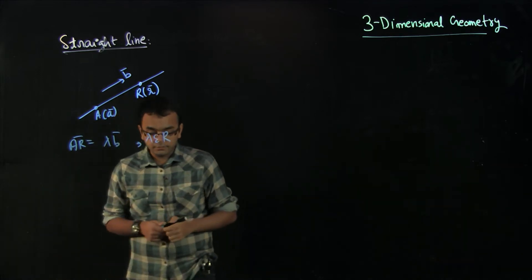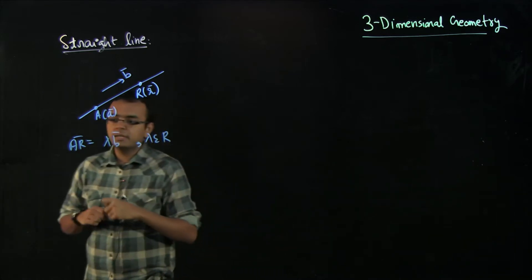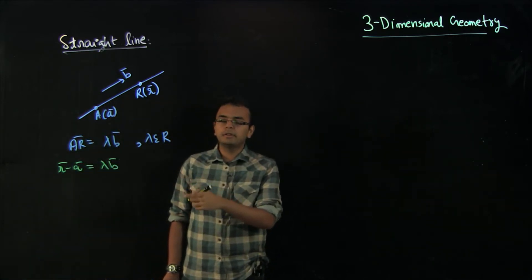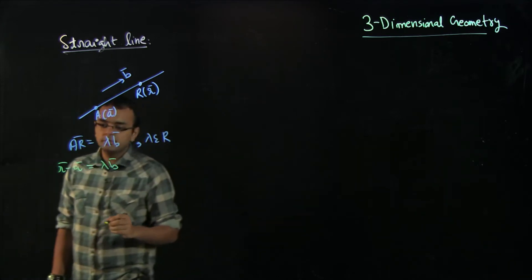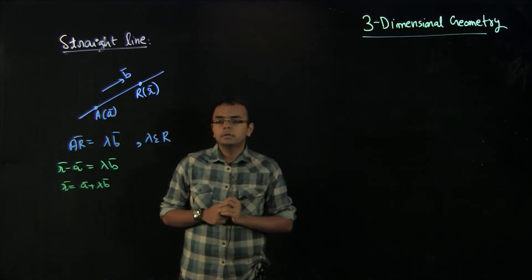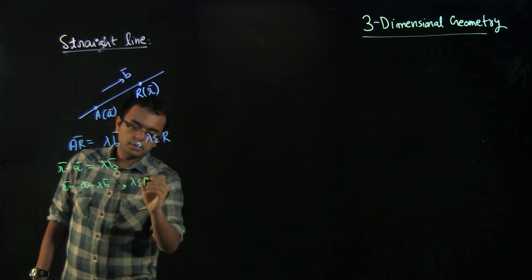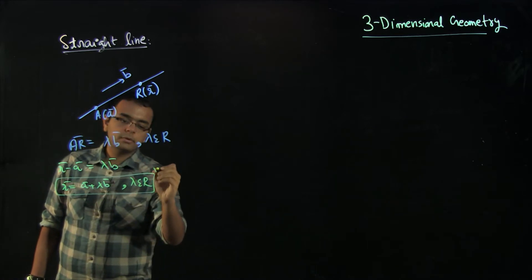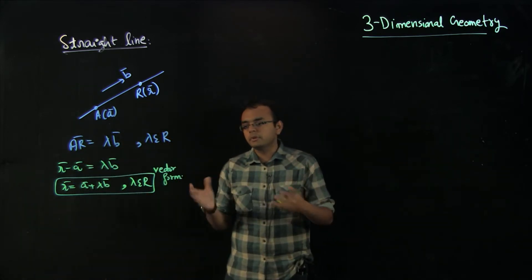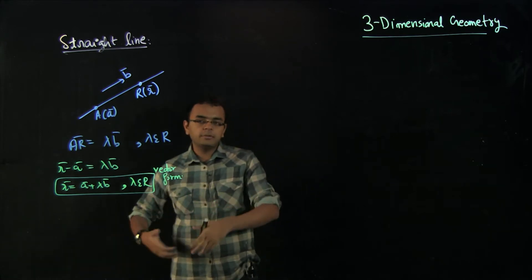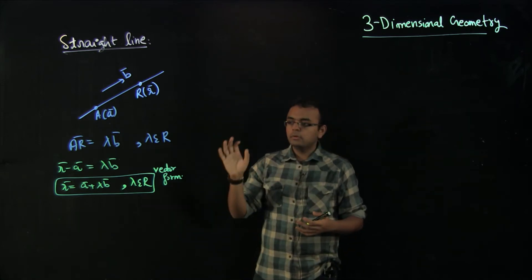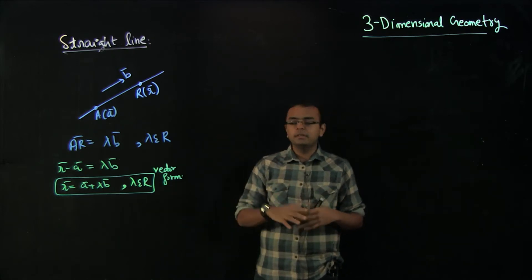We know that AR vector is small r minus A vector, and that equals lambda times B vector. So small r vector equals A vector plus lambda times B vector, where lambda belongs to the real numbers. This is the equation of a line in vector form. If we use any value of lambda we will always be on this line. Using lambda equal to 0 gives point A, lambda equal to 1 gives A plus B, lambda equal to minus 1 gives A minus B.